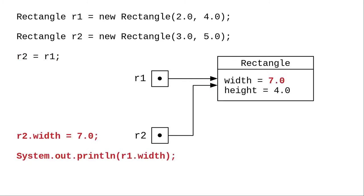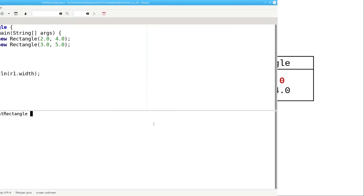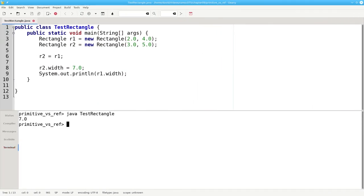Because r1 and r2 now reference the same memory area, this code setting r2.width to 7 and then printing r1.width will produce an output of 7.0. And here's the code to prove it.